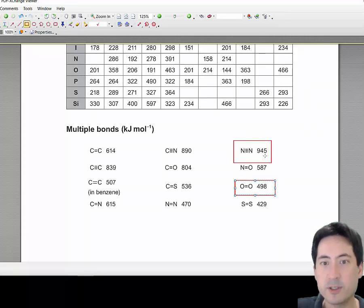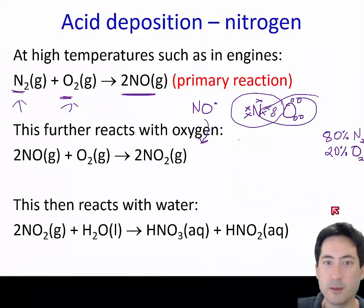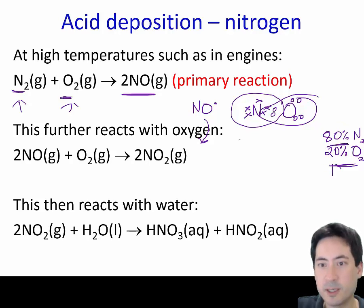Looking here, nitrogen has a bond enthalpy of 945 and oxygen is only about half of that. Once you form this radical, what's it most likely to do? It has access to both, but oxygen is far more reactive, whereas nitrogen isn't because of those bond enthalpies. What's it going to hit? The next thing it's likely to run into is oxygen.